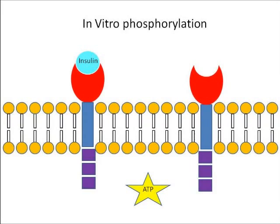Methods: In vitro phosphorylation was done by adding insulin to ATP. Insulin binds to the alpha subunits of the receptor, which activates the insulin receptor. This activation causes the activation of beta subunits containing the protein tyrosine kinase domains. This enzyme then takes a phospho group from the ATP, causing the beta subunits to be phosphorylated, therefore phosphorylating the whole insulin receptor.